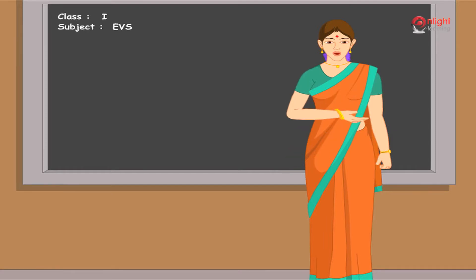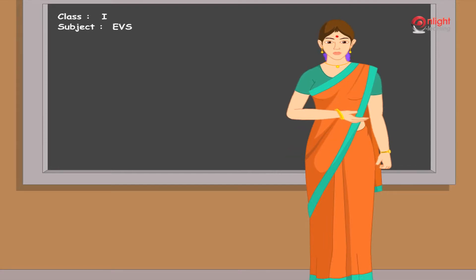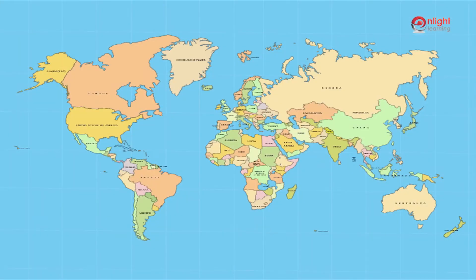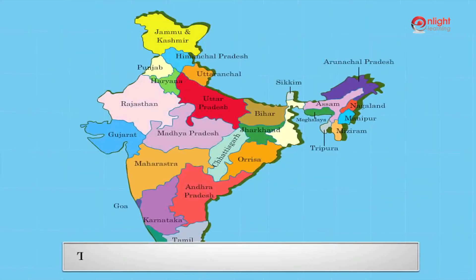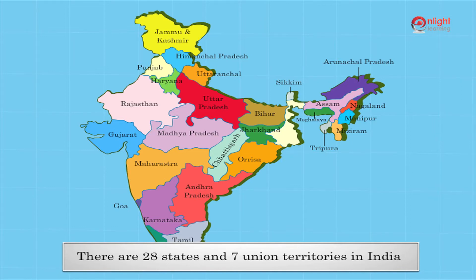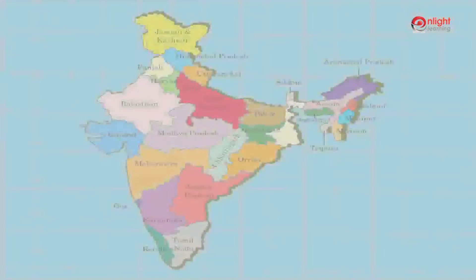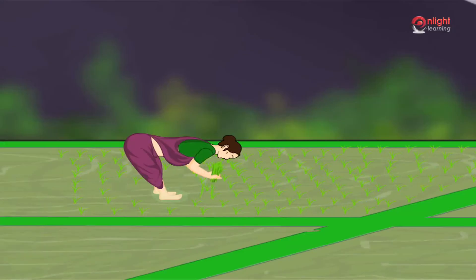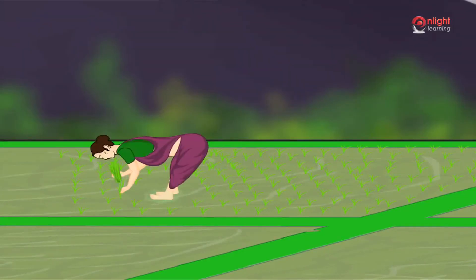Good morning kids! In today's class we are going to learn about our country India. India is the seventh biggest country in the world. There are 28 states and seven Union territories in India. Delhi is the capital of our country. Agriculture is the main occupation of the people of India.